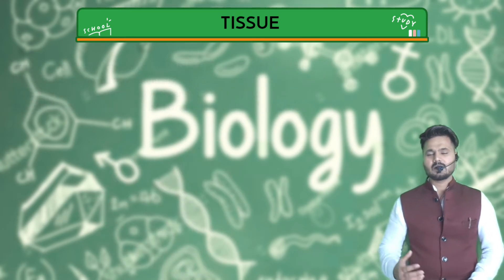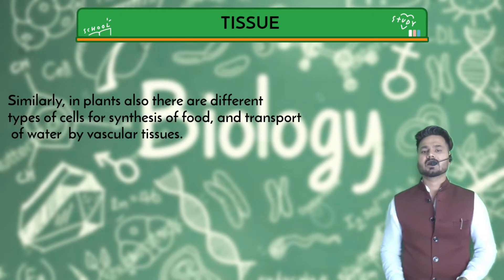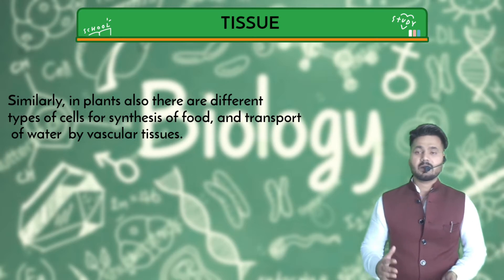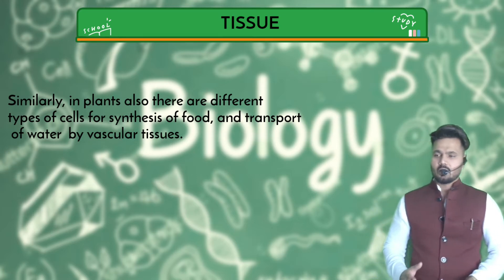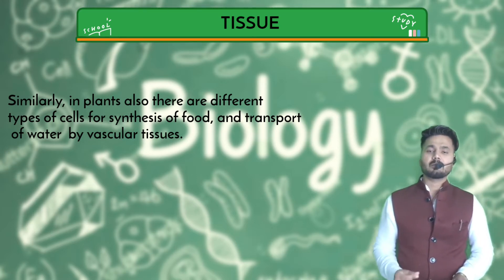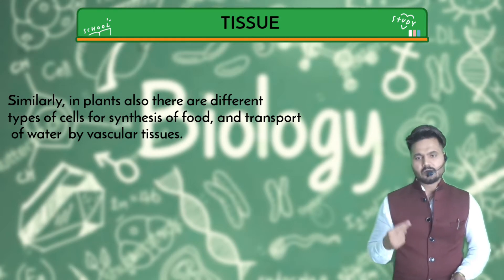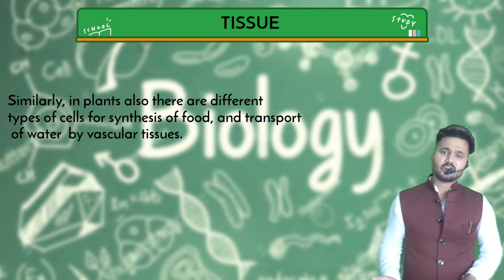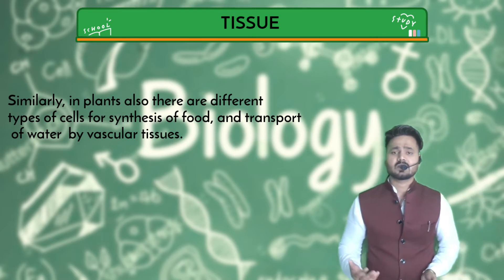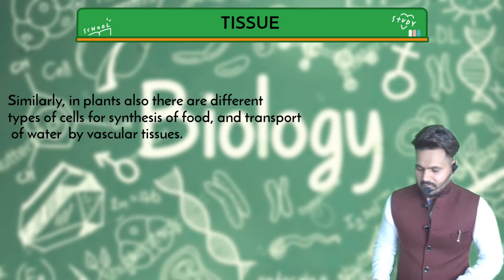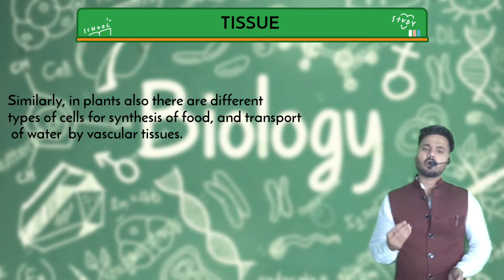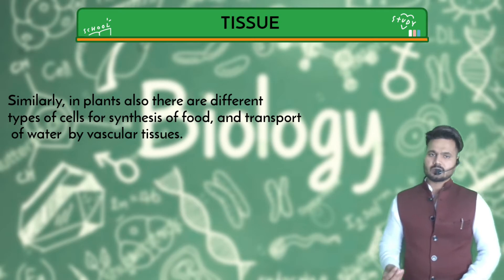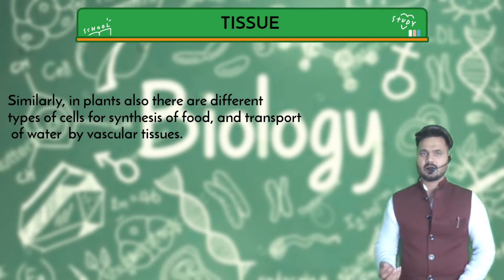Similarly, in plants, different types of cells exist. Number one is for the synthesis of food. Next, plants can also transport — you can transport water in plants — and we call these vascular tissues.